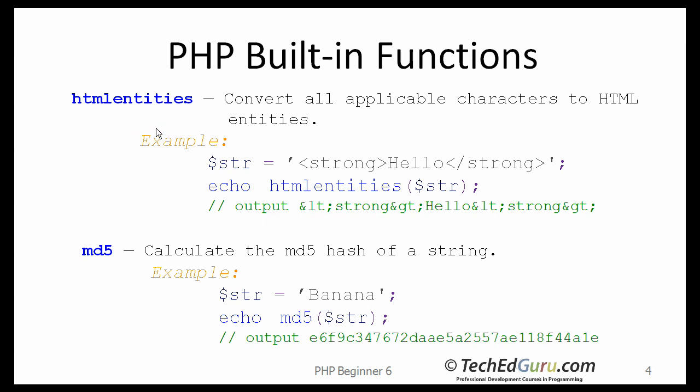The htmlentities function converts all applicable characters to HTML entities. Whenever you allow users to submit text to your website, you need to be careful not to leave any security holes open for malicious users to exploit. If you are going to allow user-submitted text to be visible by the public, you should consider using htmlentities to prevent them from running HTML code and scripts that may be harmful to your visitors.